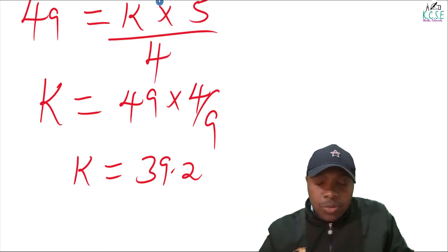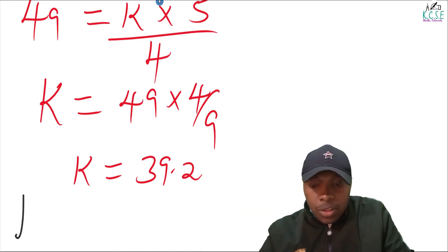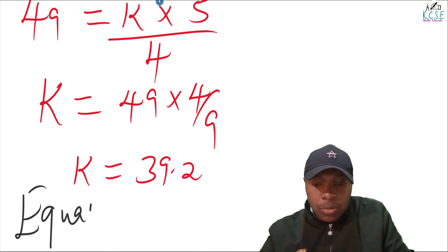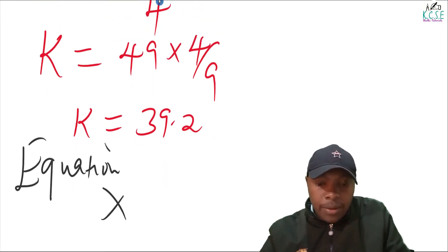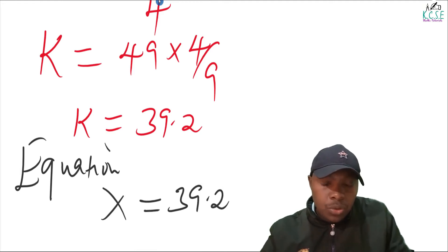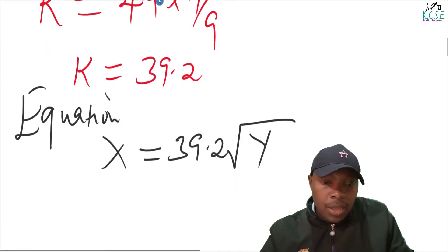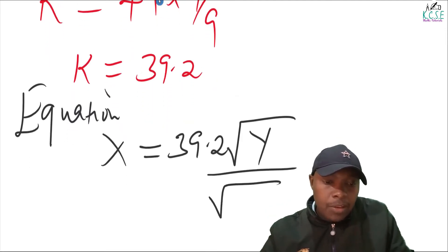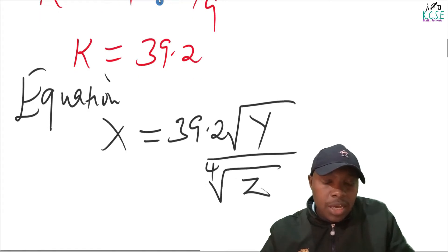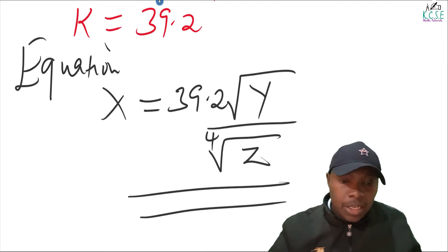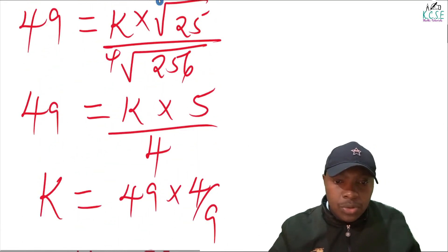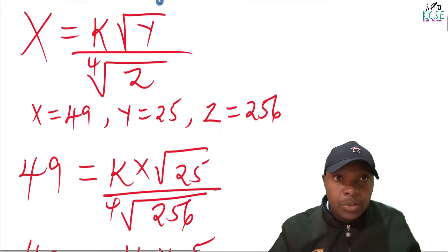Now we have obtained the value of the constant. The next thing is to write the equation. So therefore, the equation connecting x, y and z is: x equals 39.2 times the square root of y, divided by the fourth root of z. That is how you work out that first part of the question.